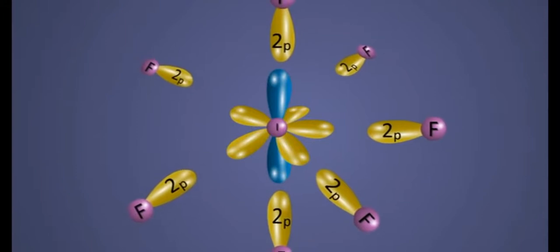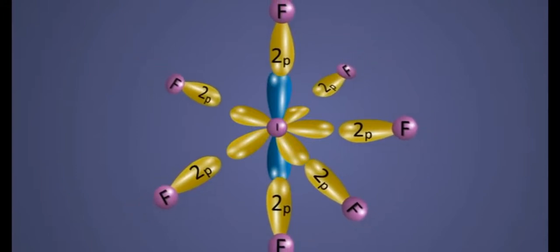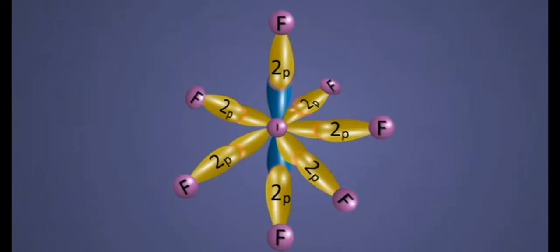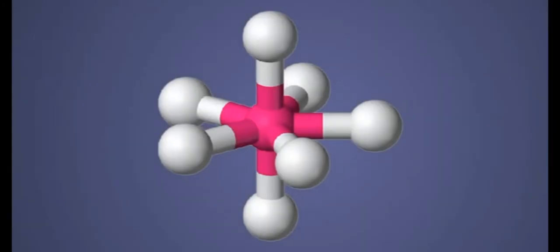These hybrid orbitals then overlap with 2P orbitals of fluorine one by one as shown in the animation. The resulting structure thus obtained has pentagonal bipyramidal geometry.